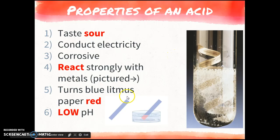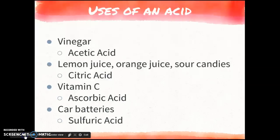They turn blue litmus paper red, hence the color coding, and they have a low pH, which we'll talk about later when we get to the pH scale. So there's a lot of uses for acids. You use it every day. Sour candies, car batteries, vitamin C, vinegar.